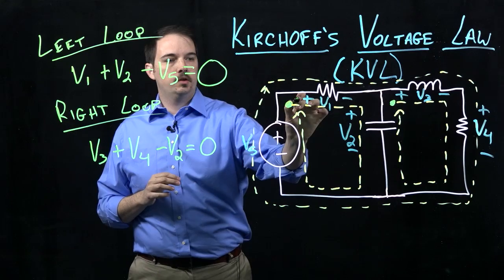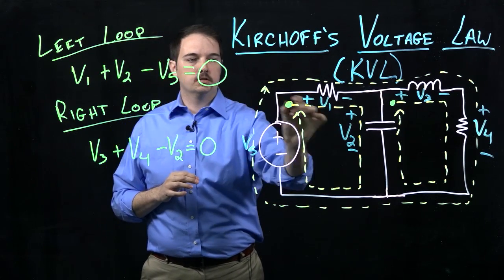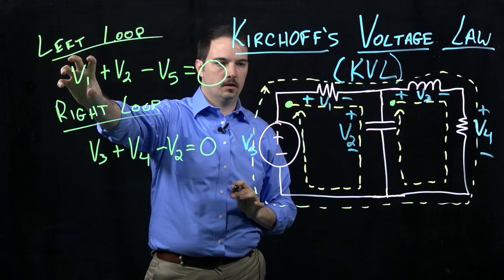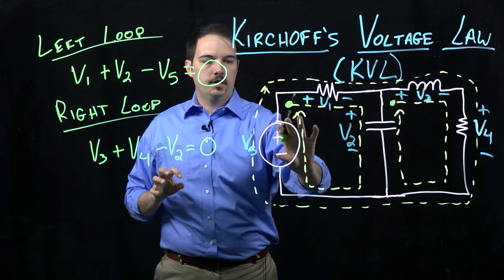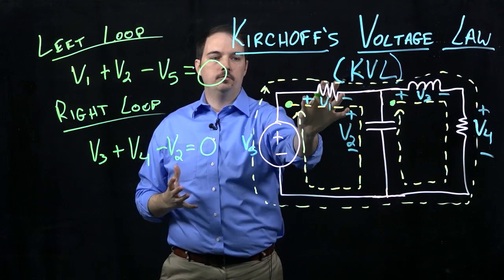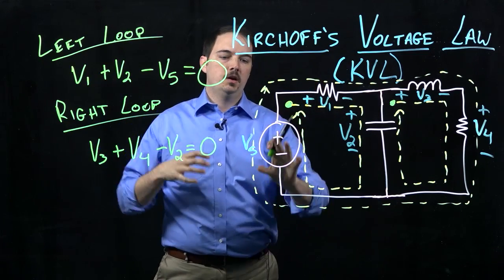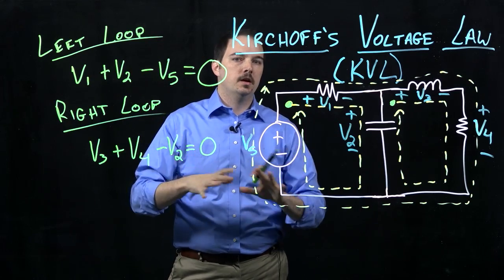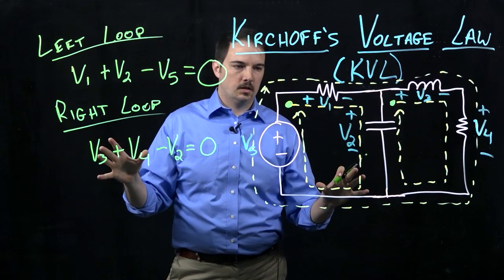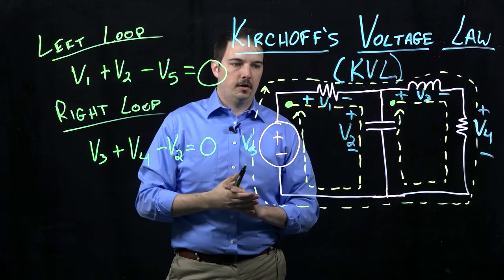Second point is that if I denote when I'm writing my equations a voltage drop from plus to minus as a positive quantity as I did here, I just have to be sure that any voltage rise is a negative quantity. But I could do the exact opposite. I could say a voltage drop is a negative quantity and a voltage rise is a positive quantity. As long as I'm consistent in how I do my analysis on the entire circuit, I will still get the exact same answer regardless of how I do that.